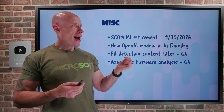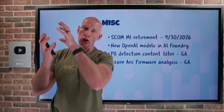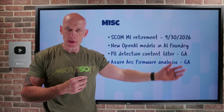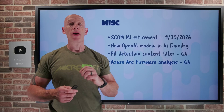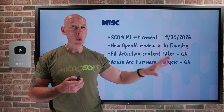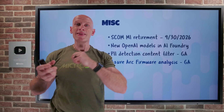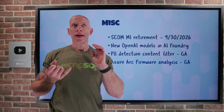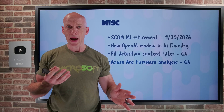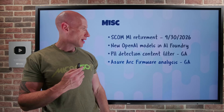Azure Arc firmware analysis is now GA. Azure Arc normally extends the Azure control plane to other operating systems and Kubernetes environments, but it can now also analyze the firmware of your IoT or network devices. There's no agent required on the device — you take the firmware image, upload it to the cloud where it's inspected for vulnerabilities, weak security configurations, hard-coded credentials, and software inventories. It will give you a full comprehensive report about that firmware.